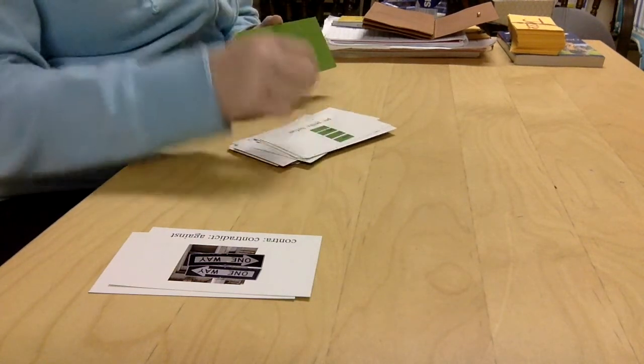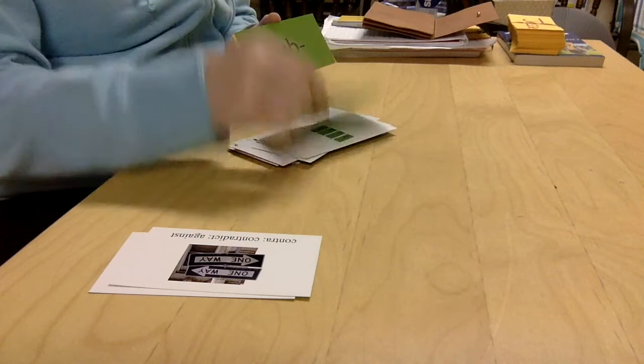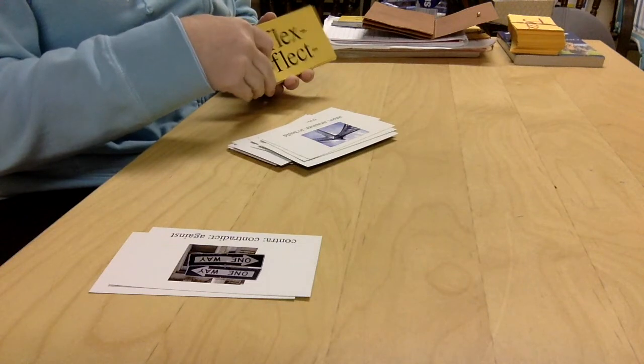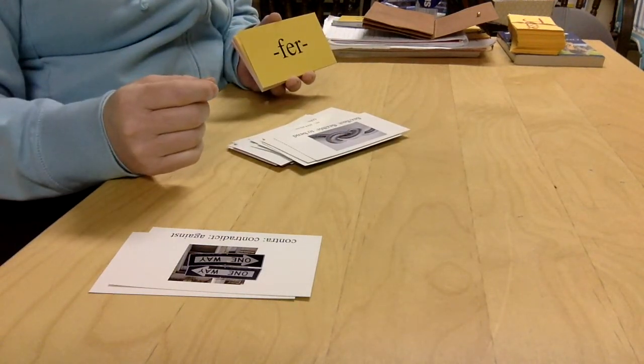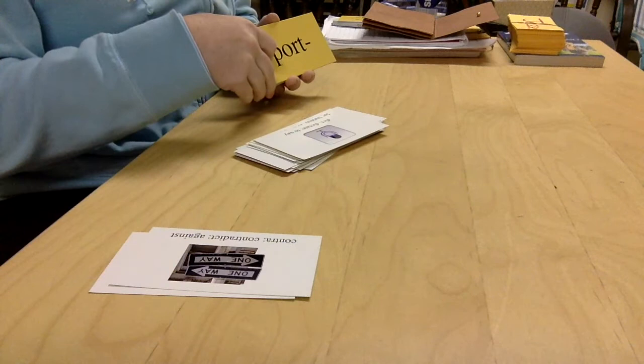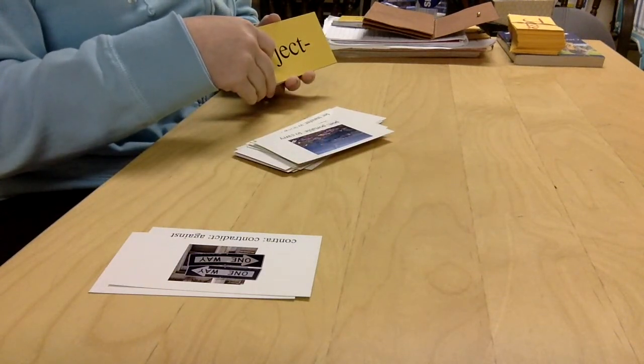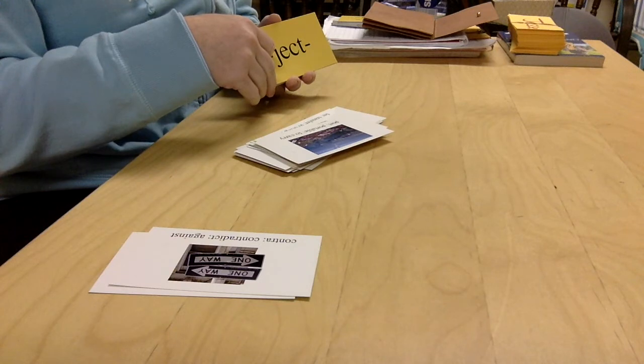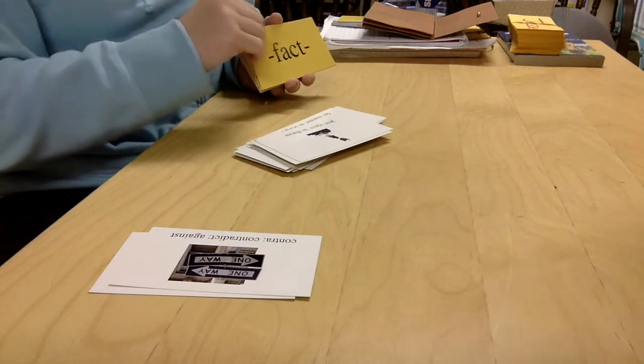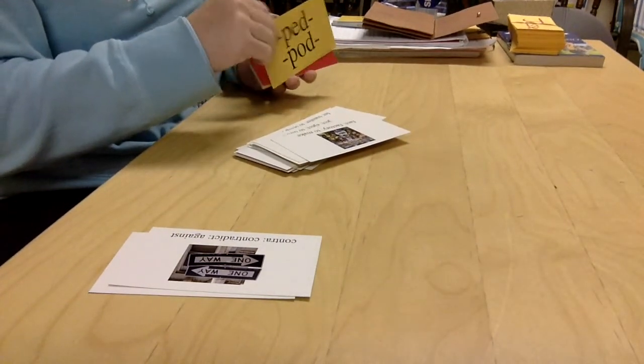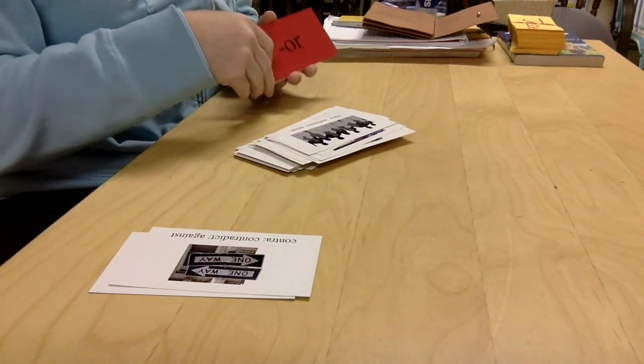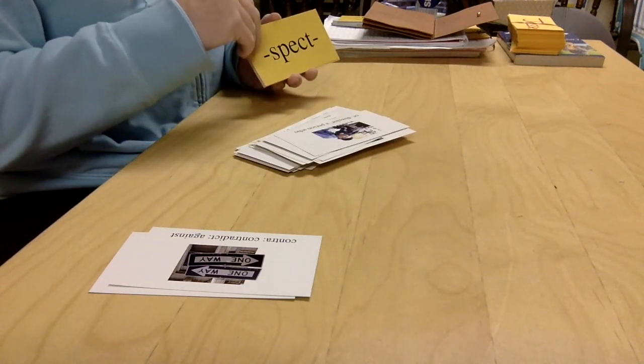Pre is to do it before. Ex? Out. Sub is under. Struct? To build. Flex is to bend. For, transfer? To send or to bring. Dict, dictate? To say. Port, portable? To carry. Ject? To throw. Fact, factory? To make. You make things in a factory. Pet or pod is your feet. Expect is to see.